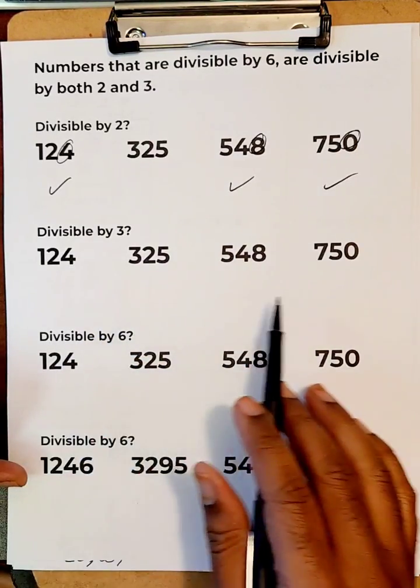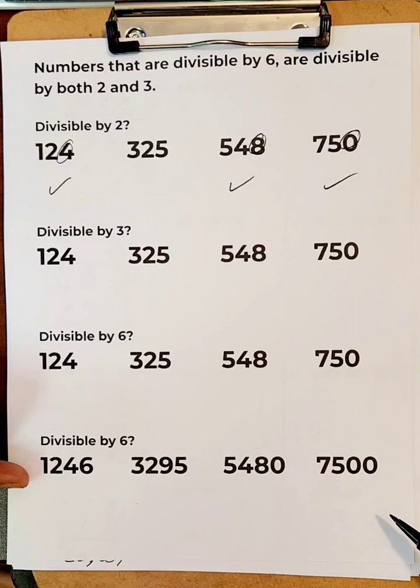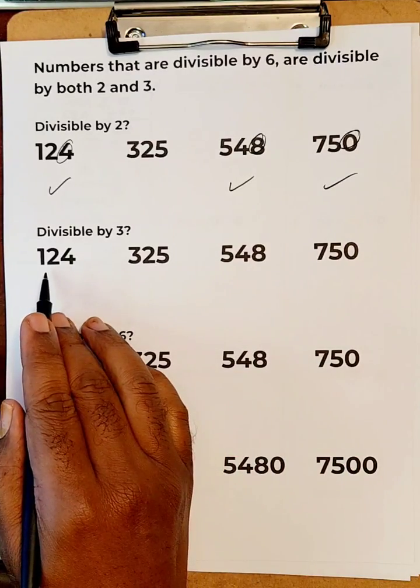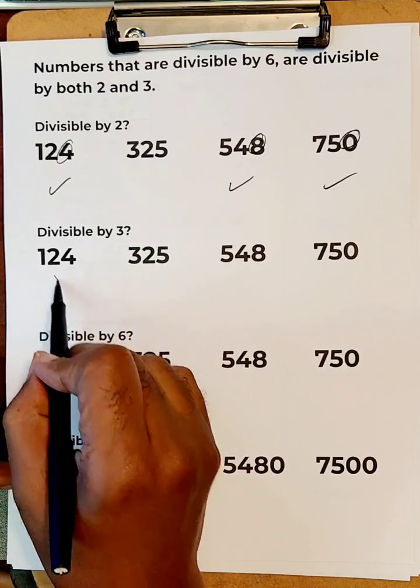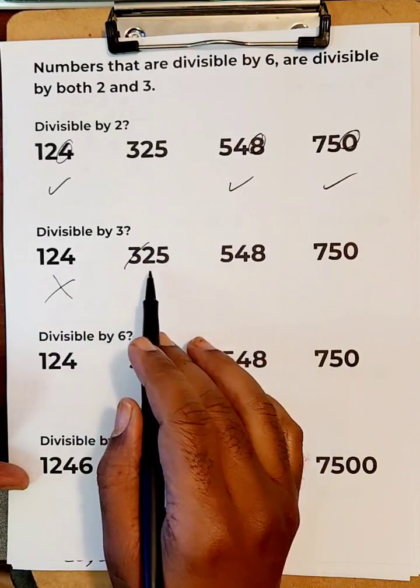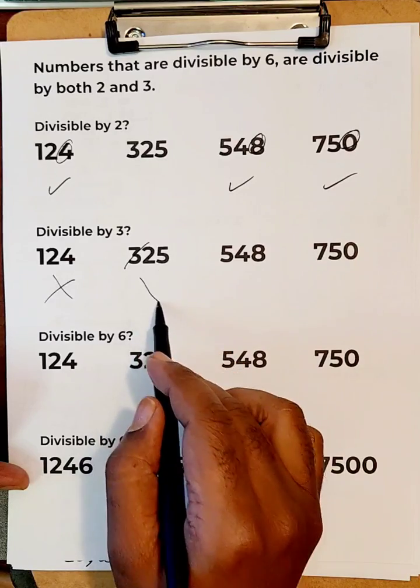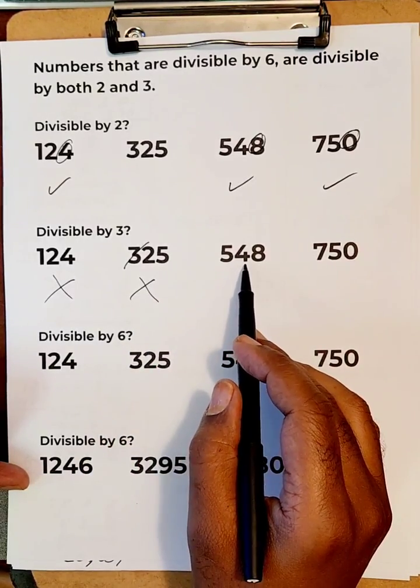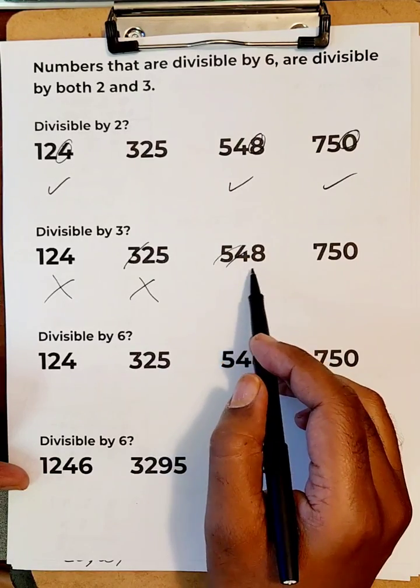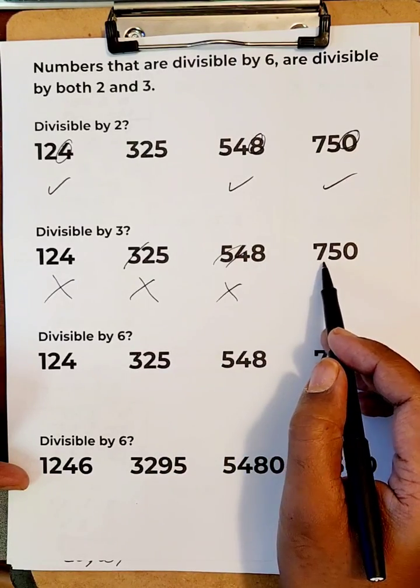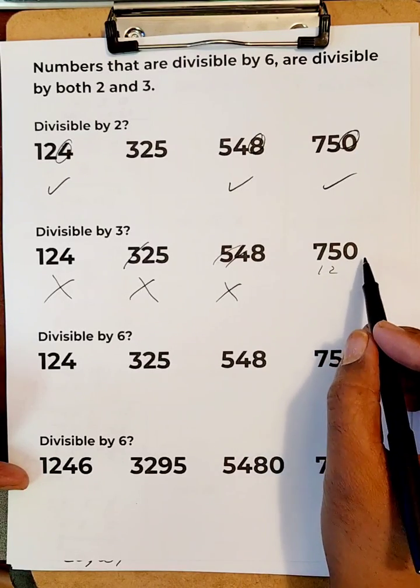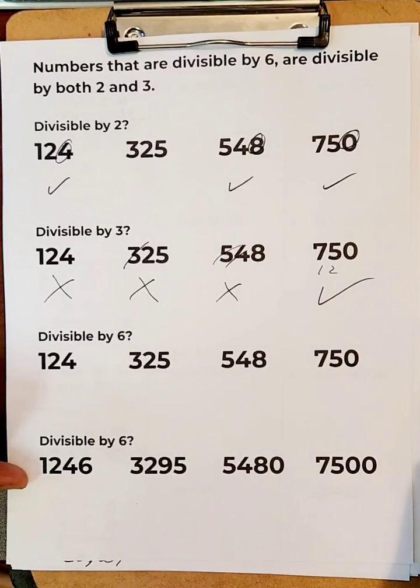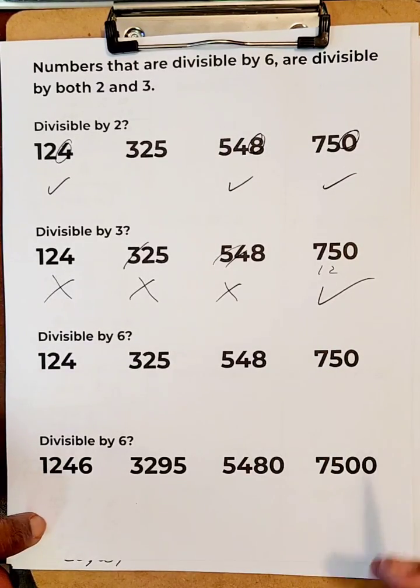Which ones do you believe are divisible by three? The answers are: one plus two makes three, and three plus four is seven, so not this one. Two plus five is seven, so this was not divisible. Five plus four is nine, but eight is not. Seven plus five is twelve, and since twelve is in the three timetables and zero plus twelve is twelve, it's the fourth one. Now, which are divisible by six?